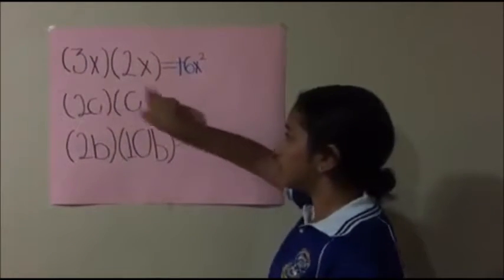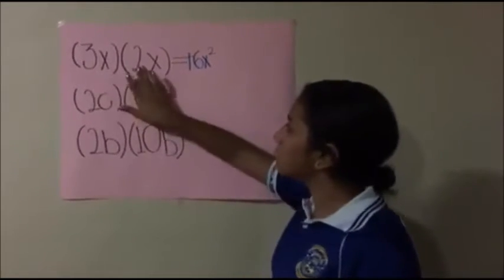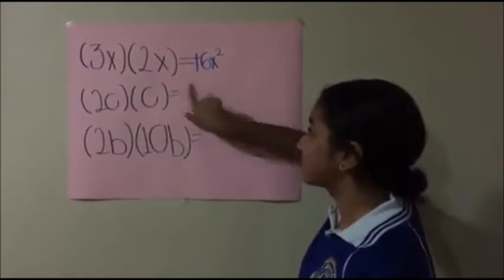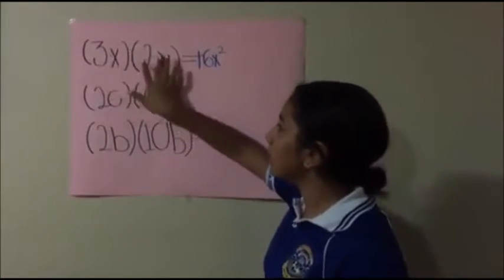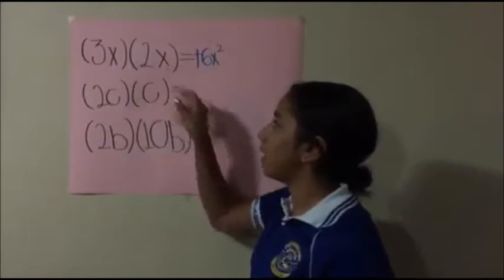Plus for plus is plus. 3x for 2x is 6x. The exponent is 2 because they are all.